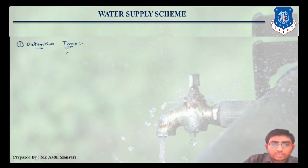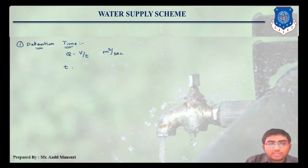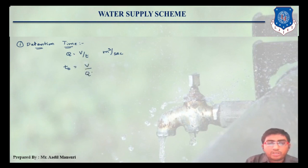We know that discharge is given by volume divided by time — the unit will be meter cube per second. If I want to find out the time, let us give the notation T0 for detention time. So T0 will be volume upon discharge. This was about the detention time.